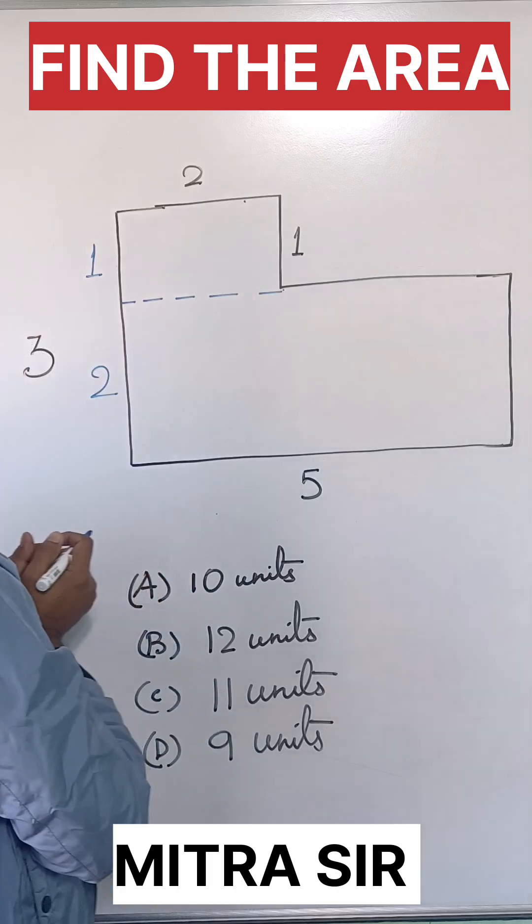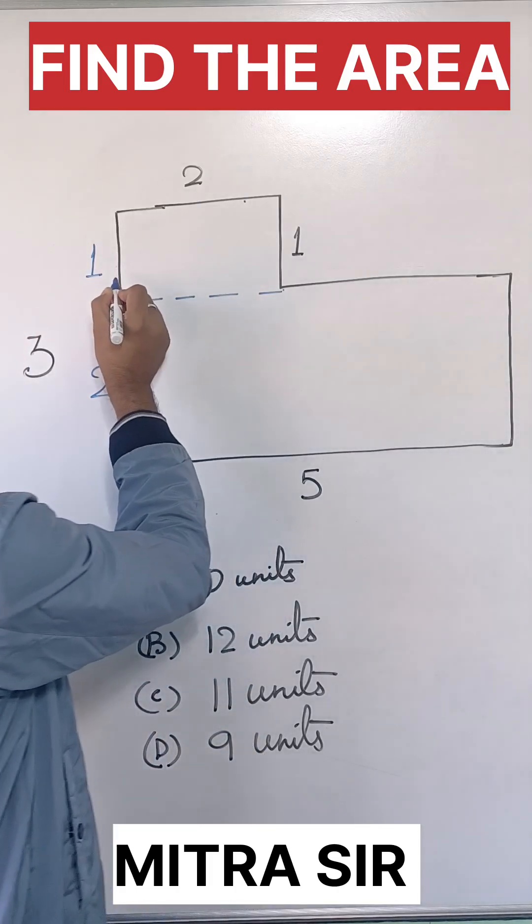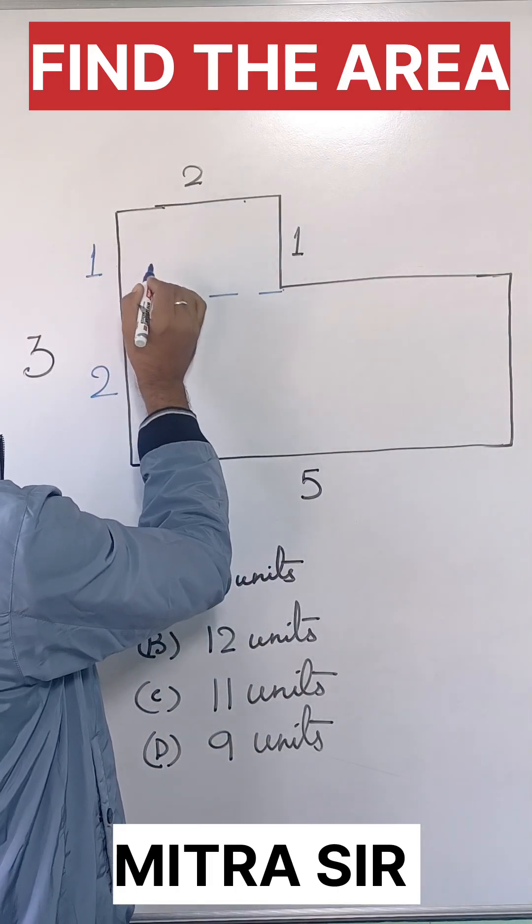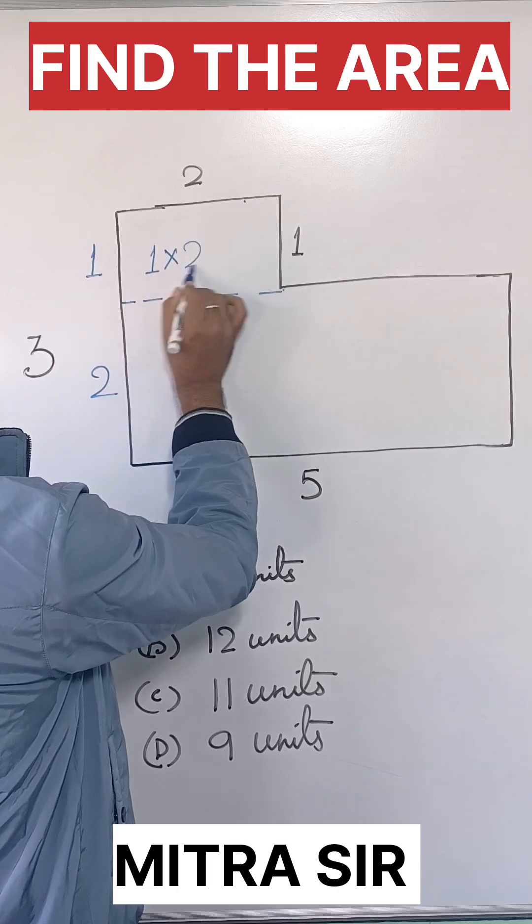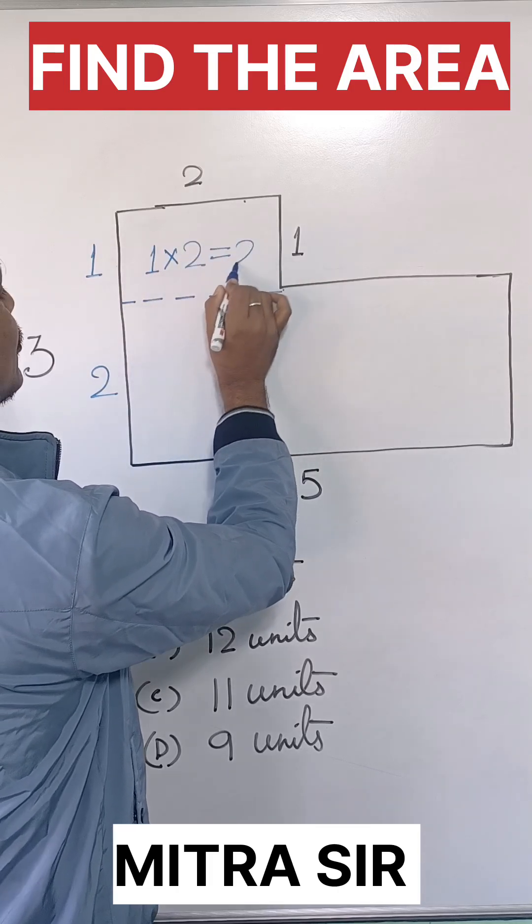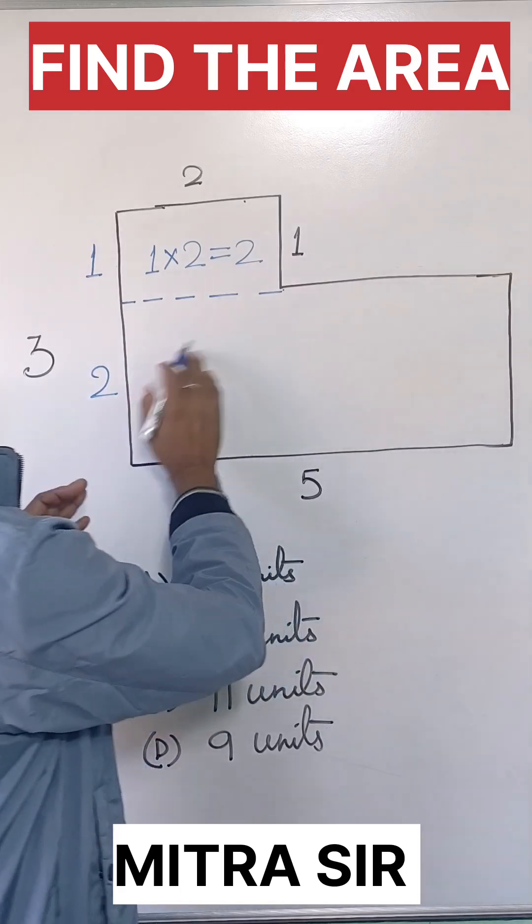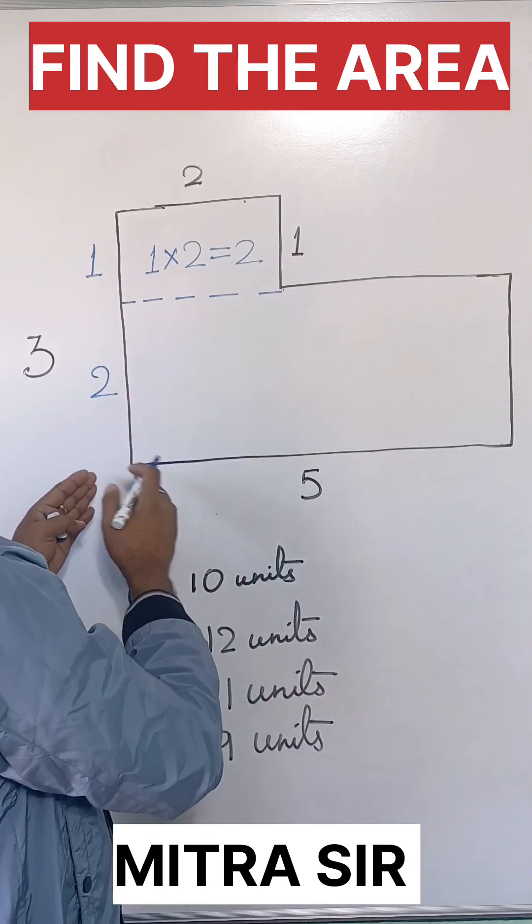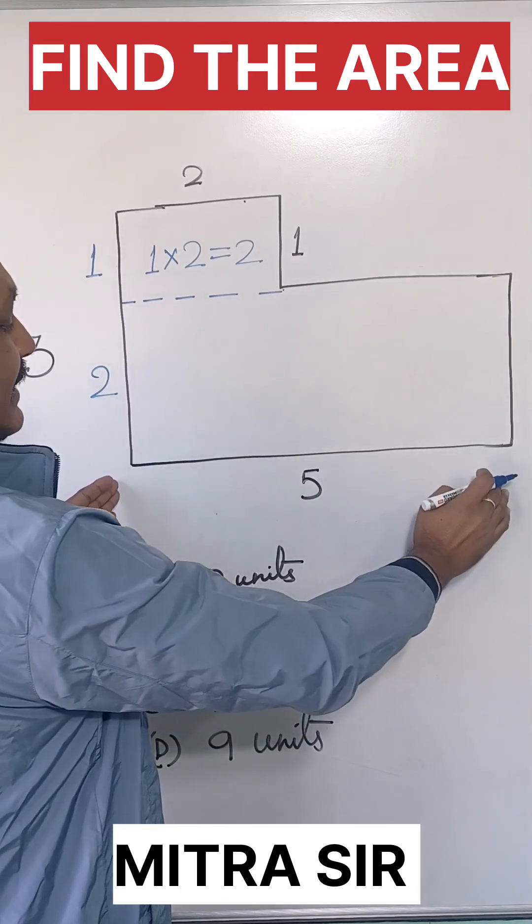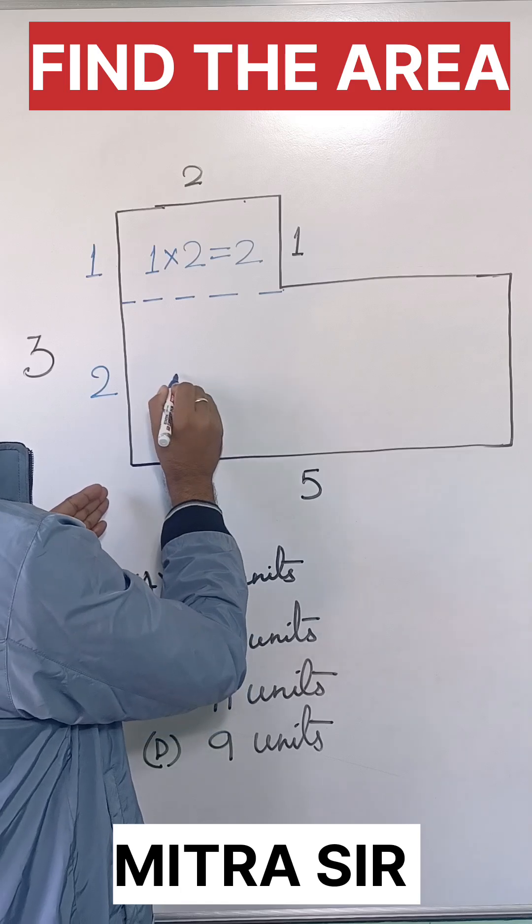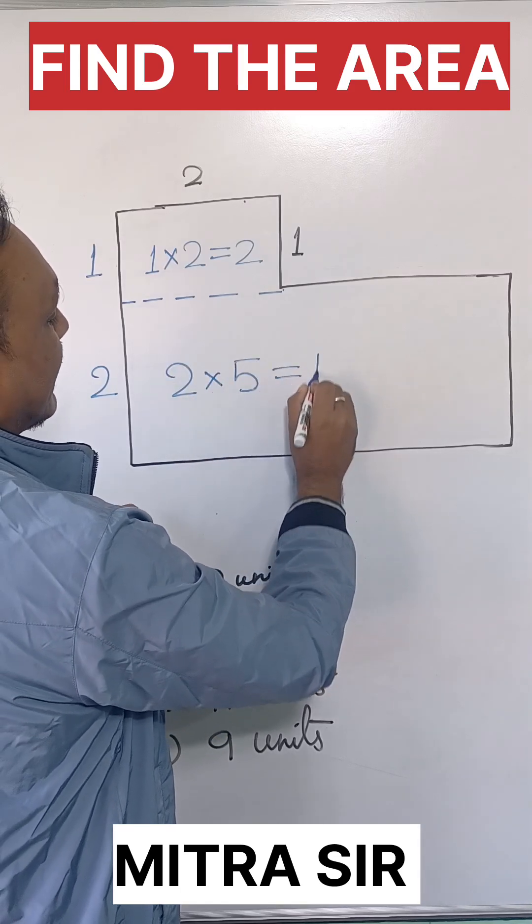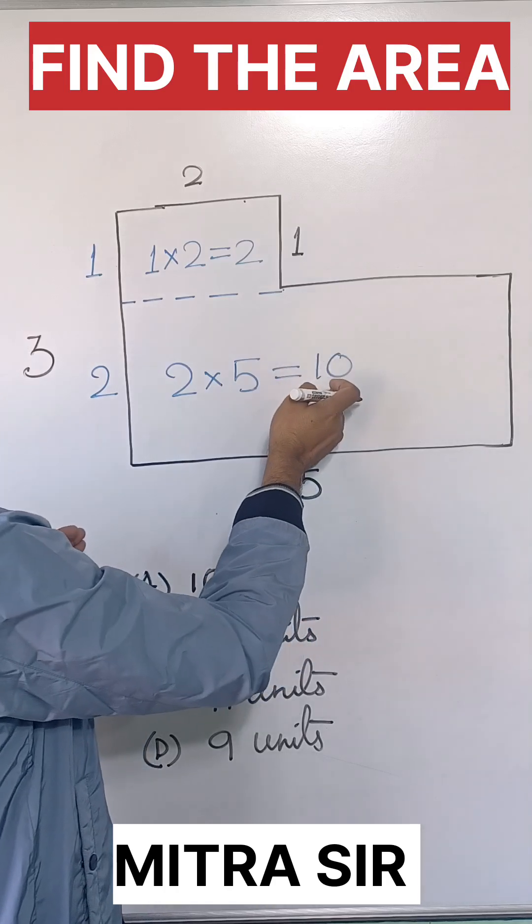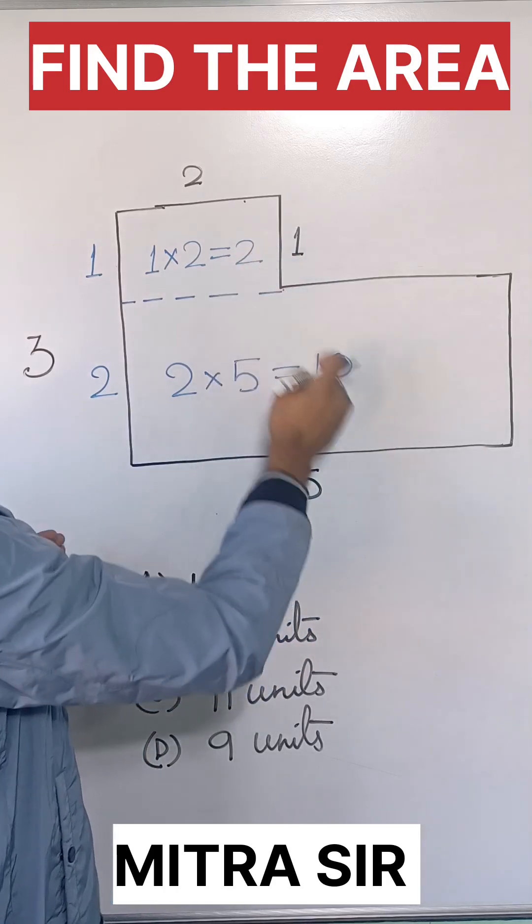We know that area of a rectangle is length times breadth. Here length is 1, breadth is 2, so 1 into 2 equals 2. Now the length is 2, breadth is 5, so length into breadth, 2 into 5, that is 10.